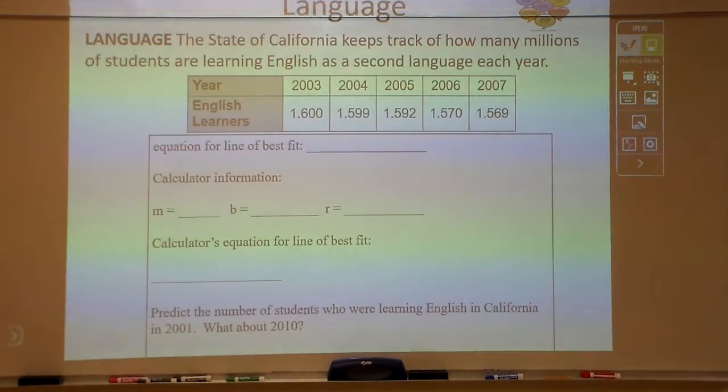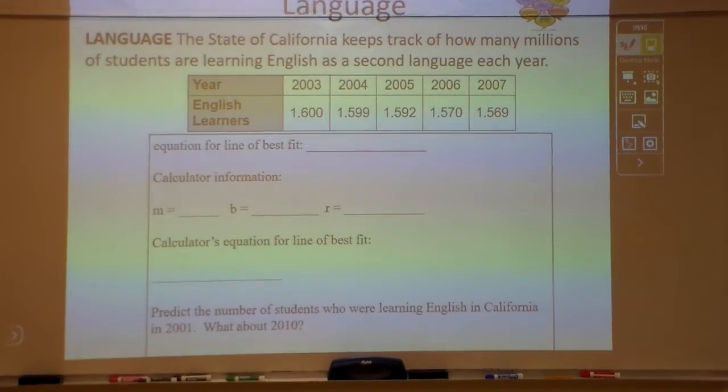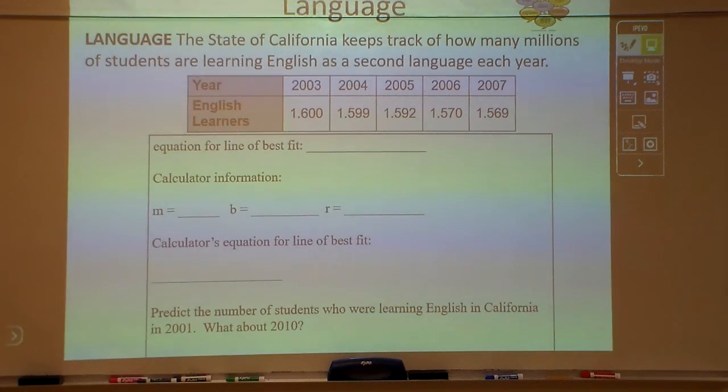Okay, here we have another one here. This is different ways to say hello, it looks like. The state of California keeps track of how many millions of students are learning English as a second language each year.